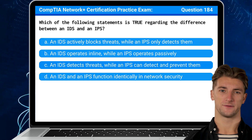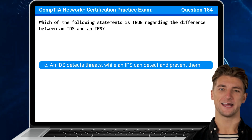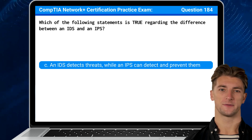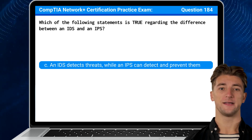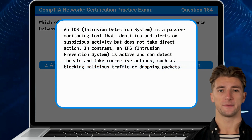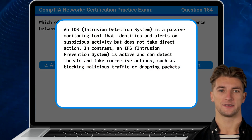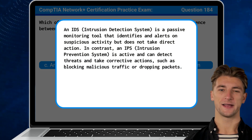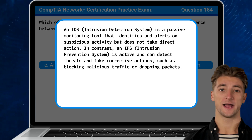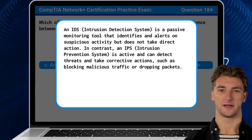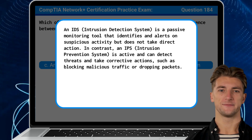The answer is C: An IDS detects threats while an IPS can detect and prevent them. An IDS is a passive monitoring tool that identifies and alerts on suspicious activity, but does not take direct action. In contrast, an IPS is active and can detect threats and take corrective actions, such as blocking malicious traffic or dropping packets.